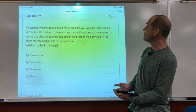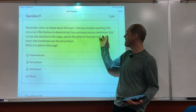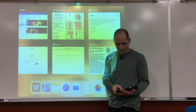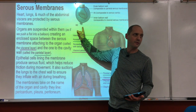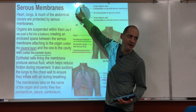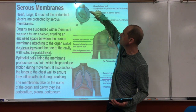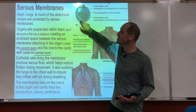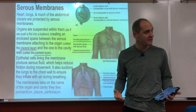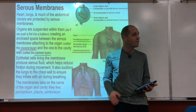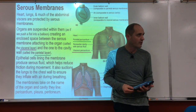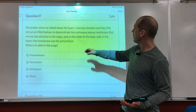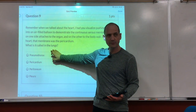Remember when we talked about the heart — pushing your fist into an air-filled balloon to demonstrate the continuous series of membranes attached on one side to the organ, on the other side to the body wall? The lungs have the same thing. That membrane space is filled with serous fluid that reduces friction and gives the organ room to move. In the heart it's called the pericardium. What is it called in the lungs? The pleura.